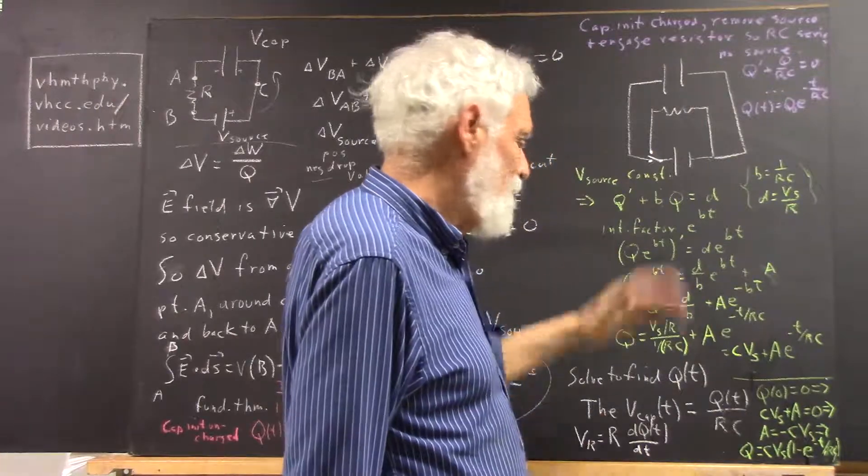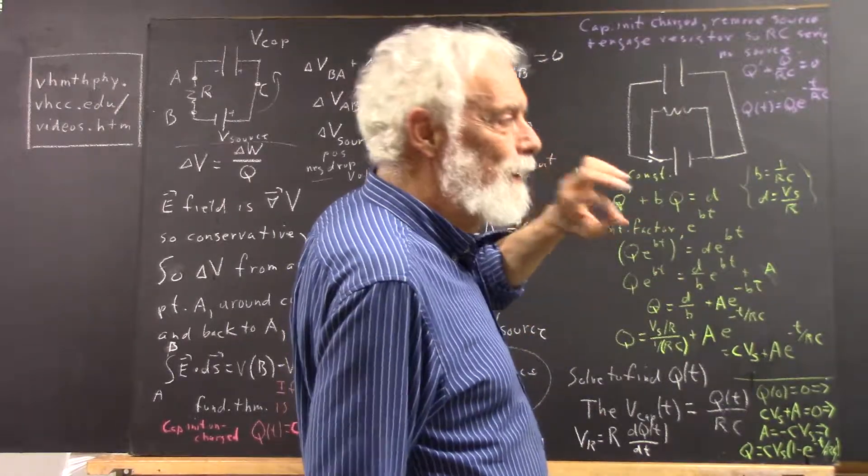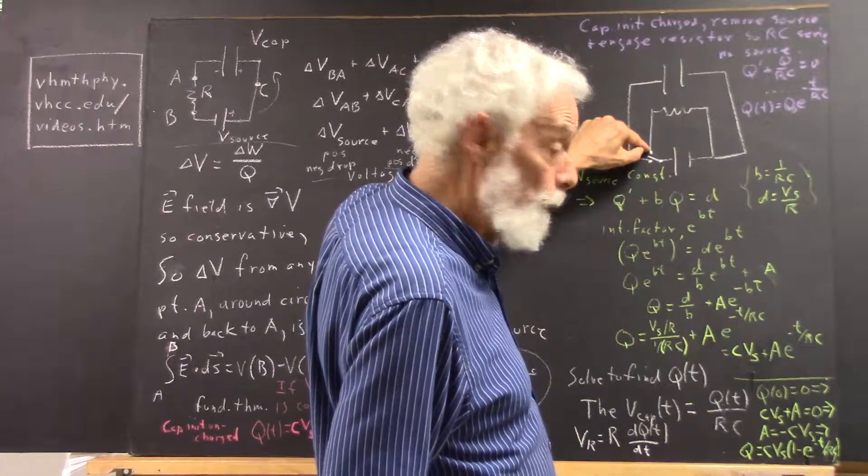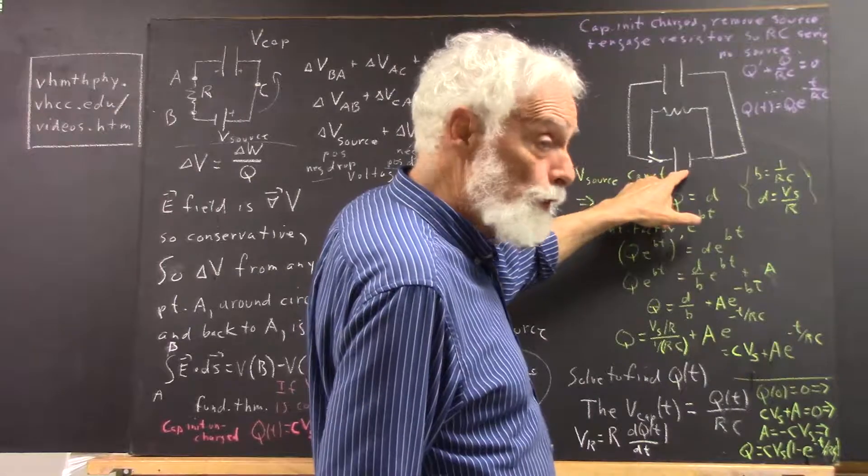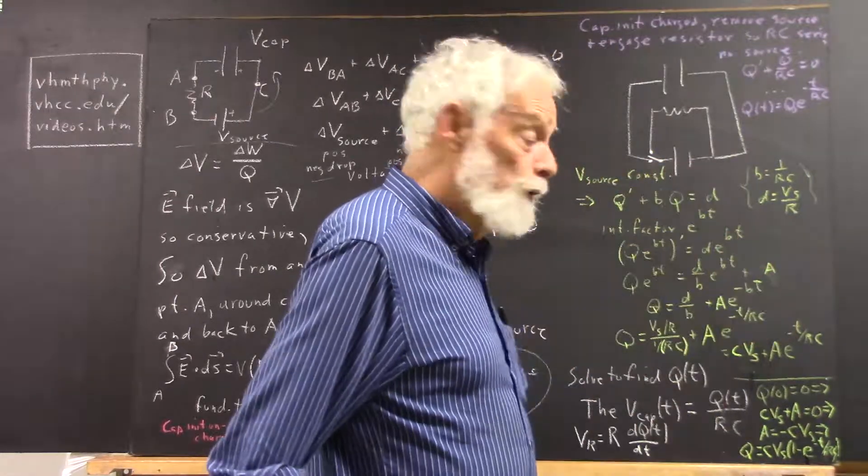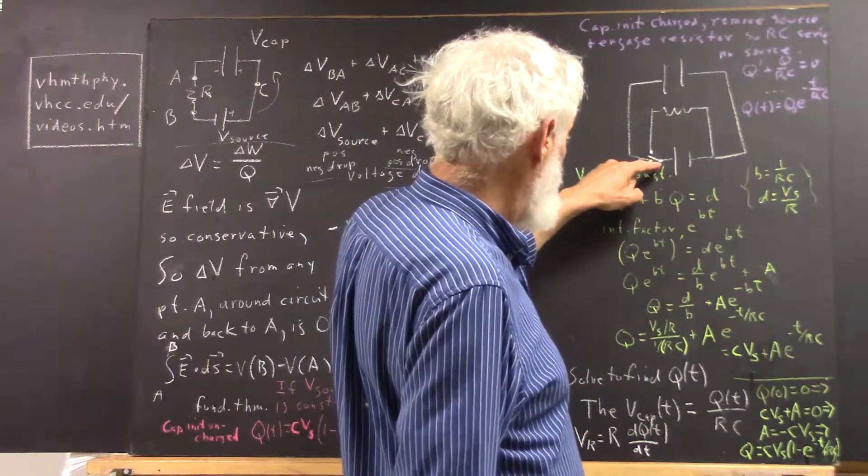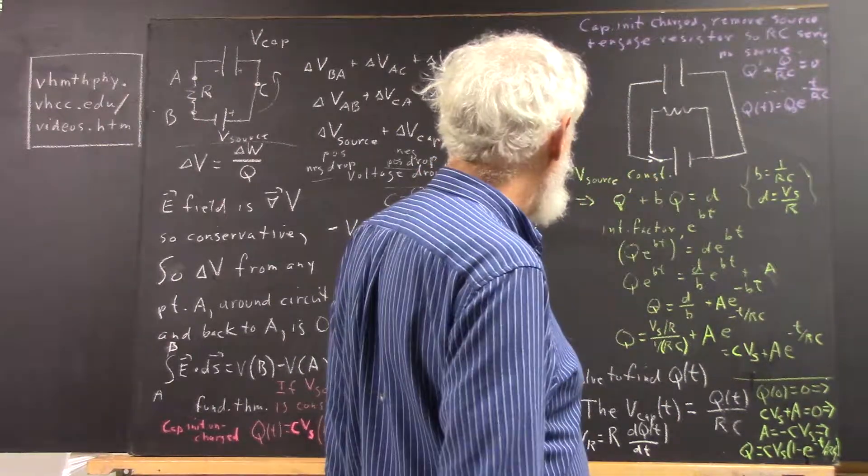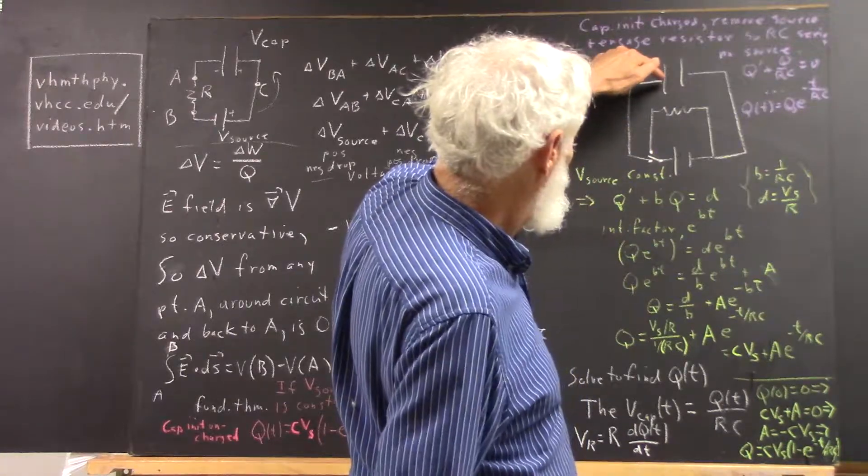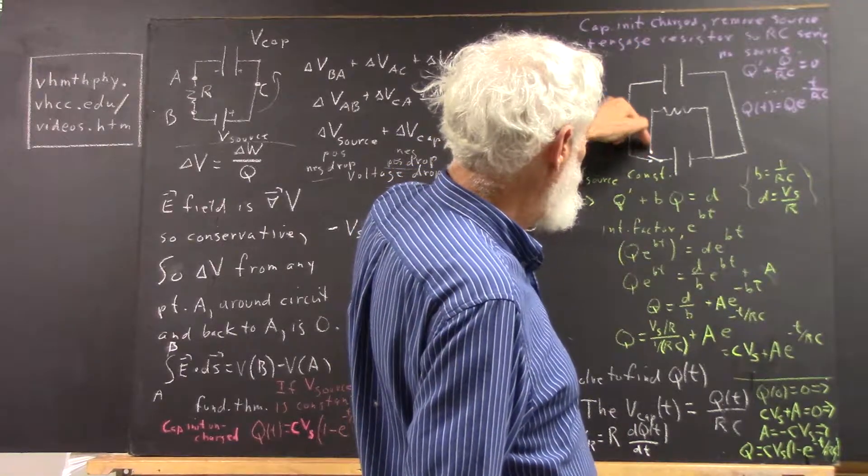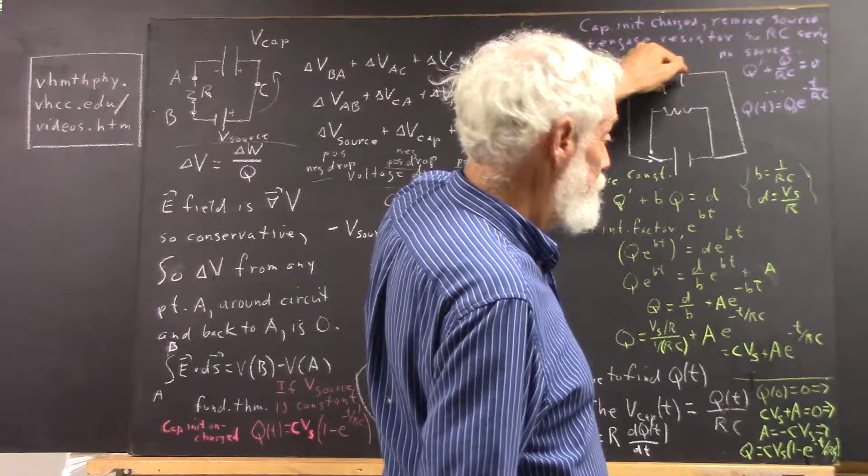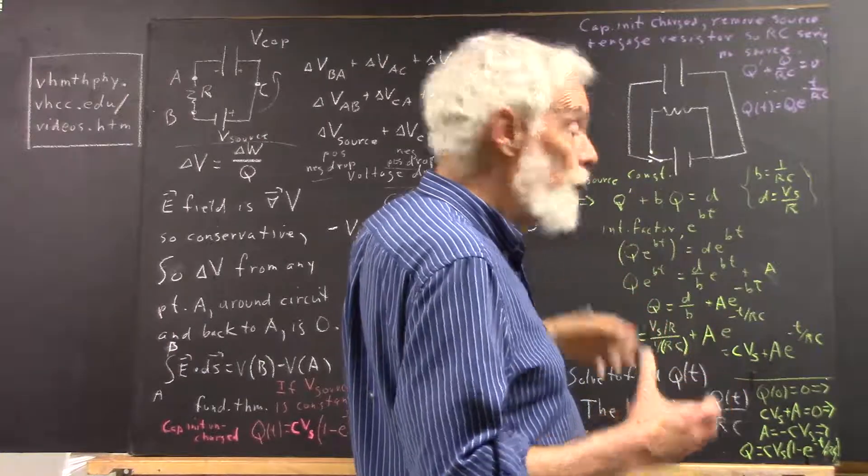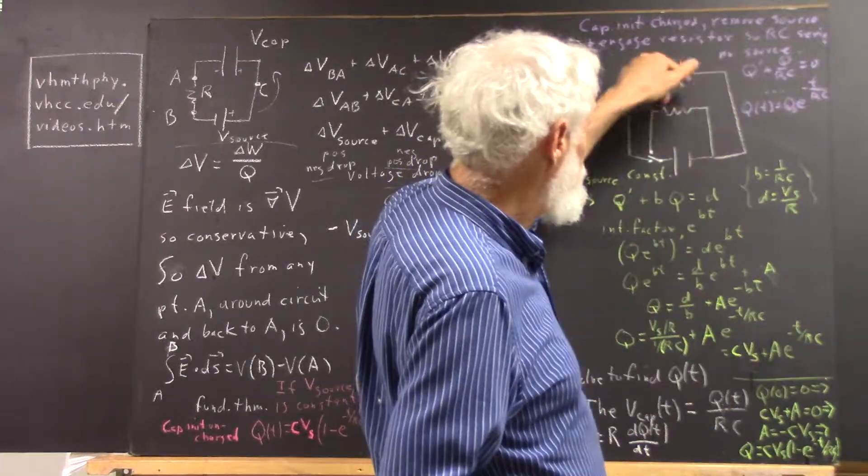we take the switch and we throw it from here to here, which takes the source out of the circuit because current can't flow from here to here unless the source is connected to something else. Now the charge on the capacitor will flow back through the resistor so that the charge on the capacitor will equalize by the drift of charge through the circuit.